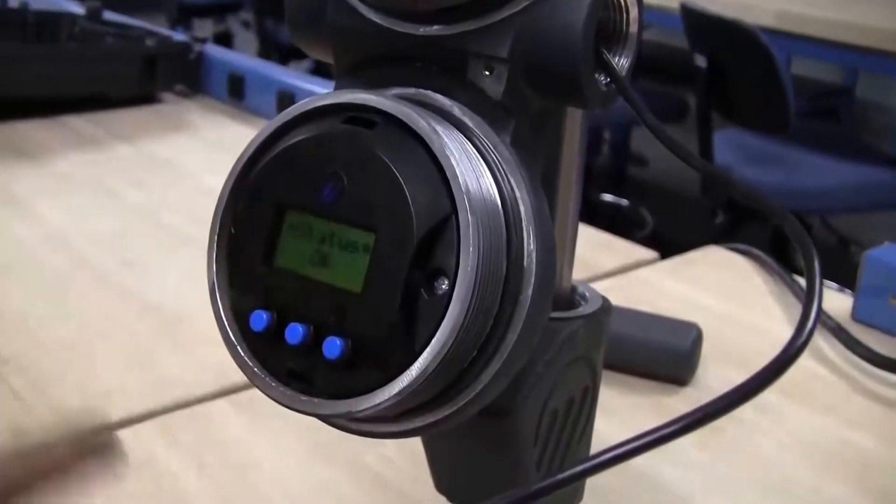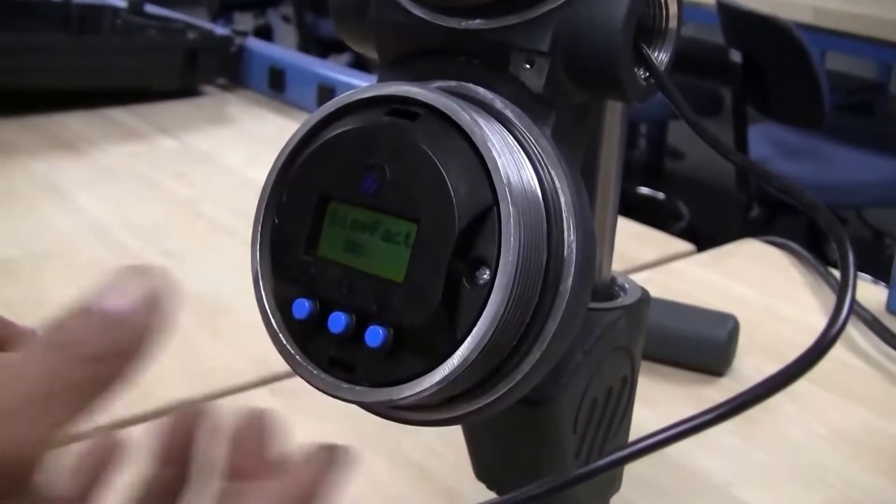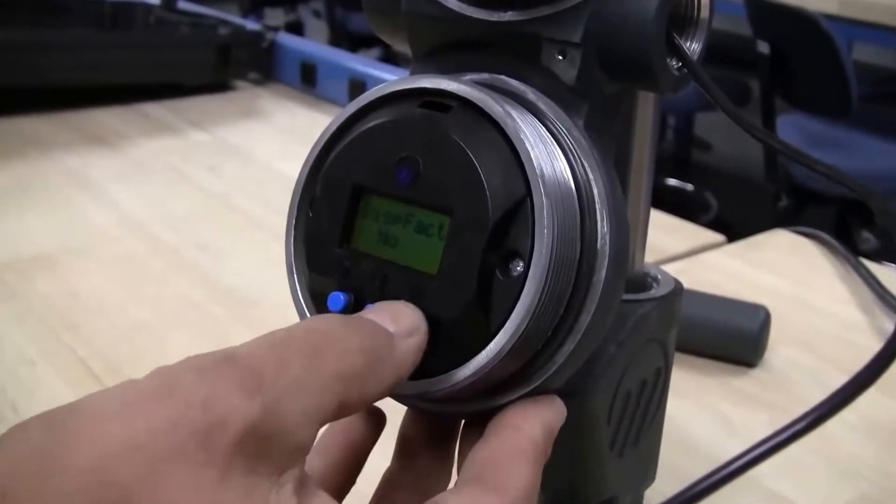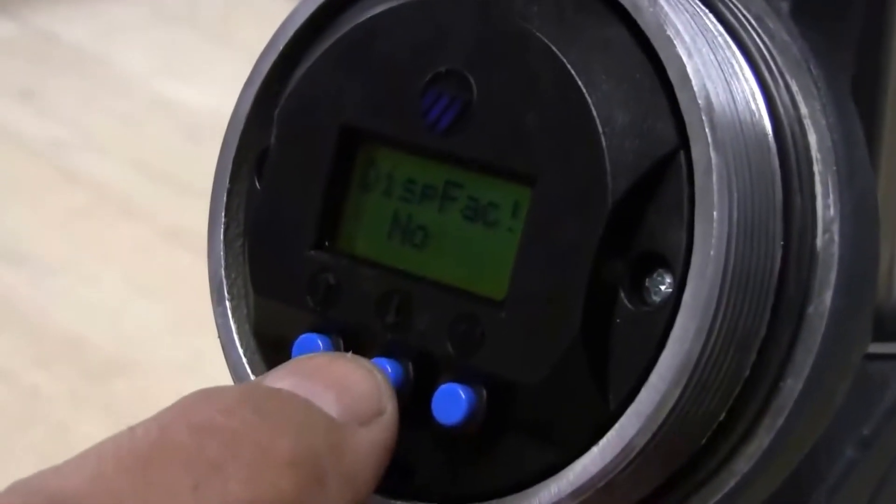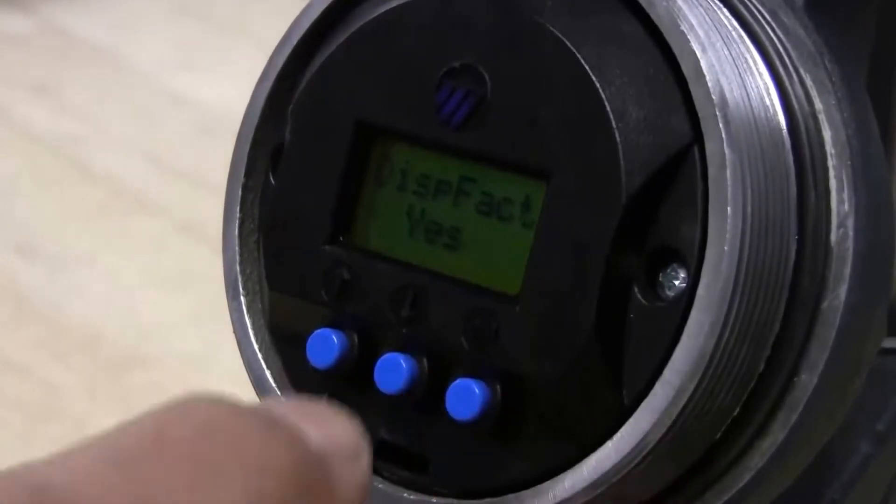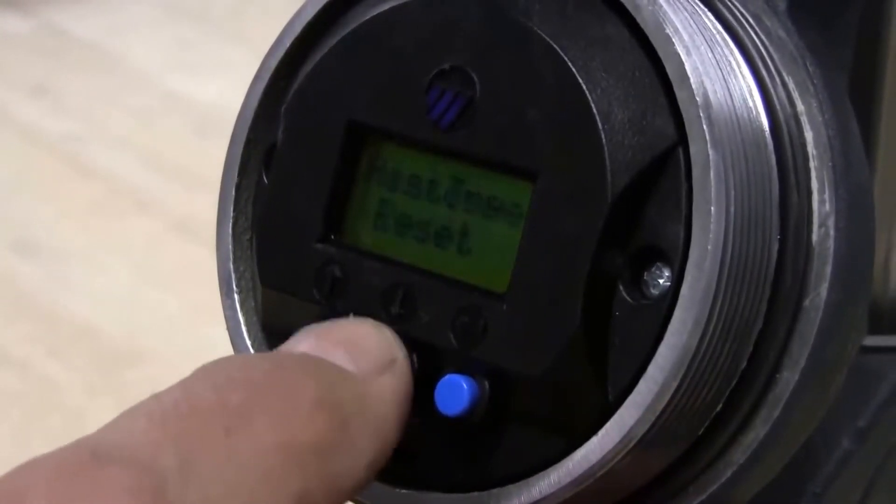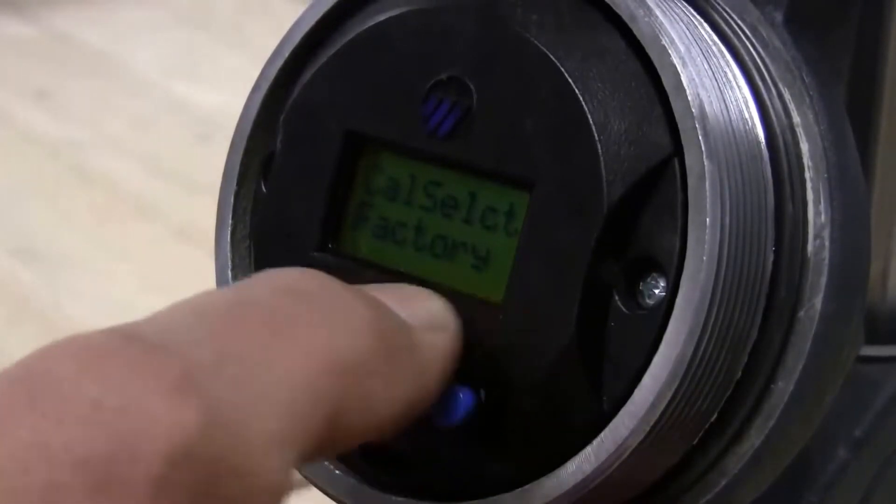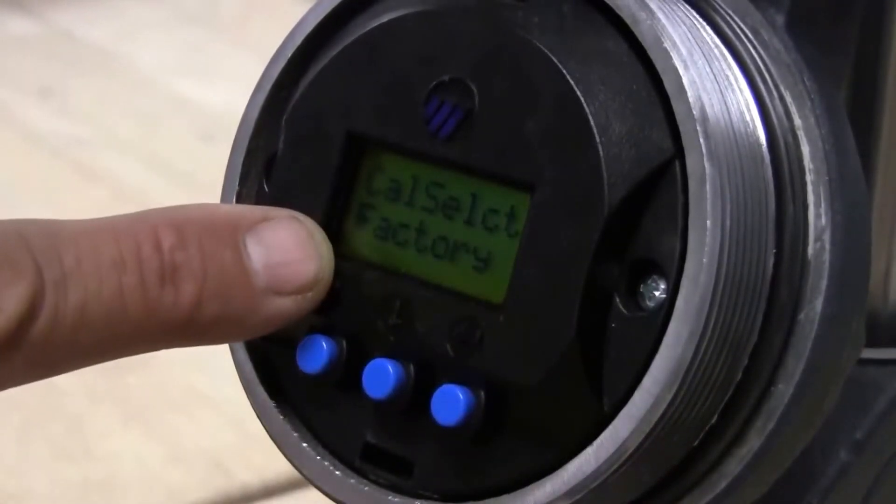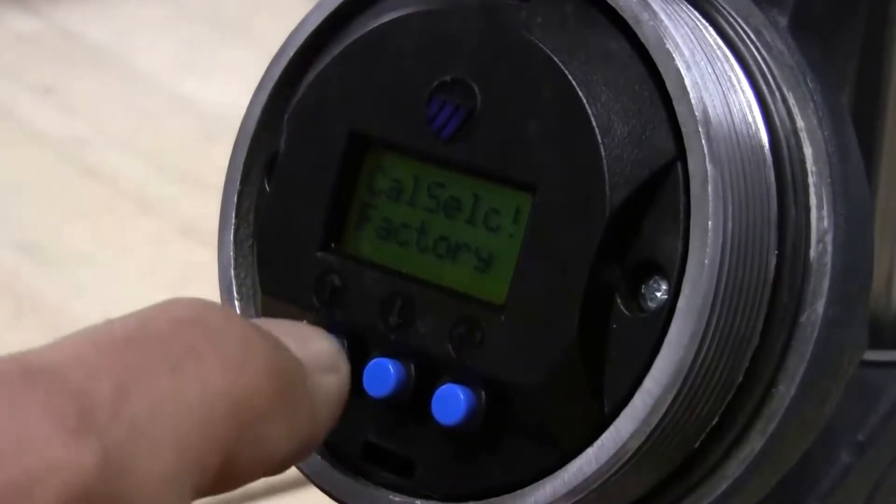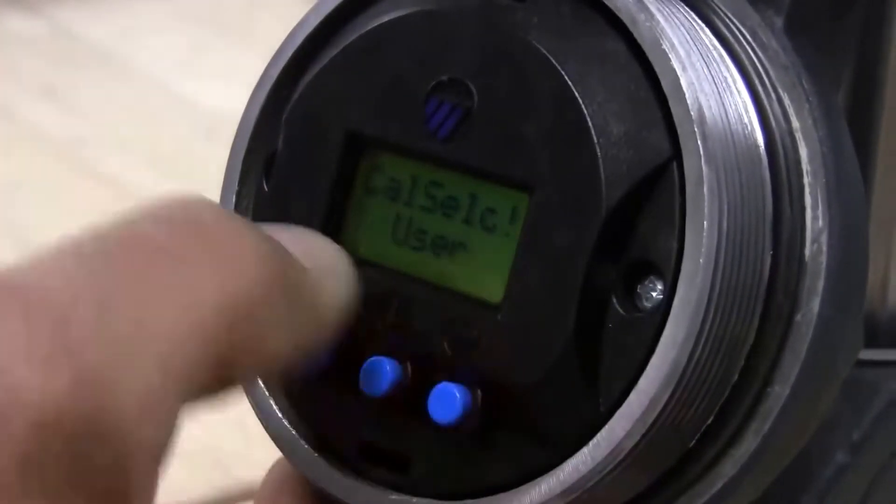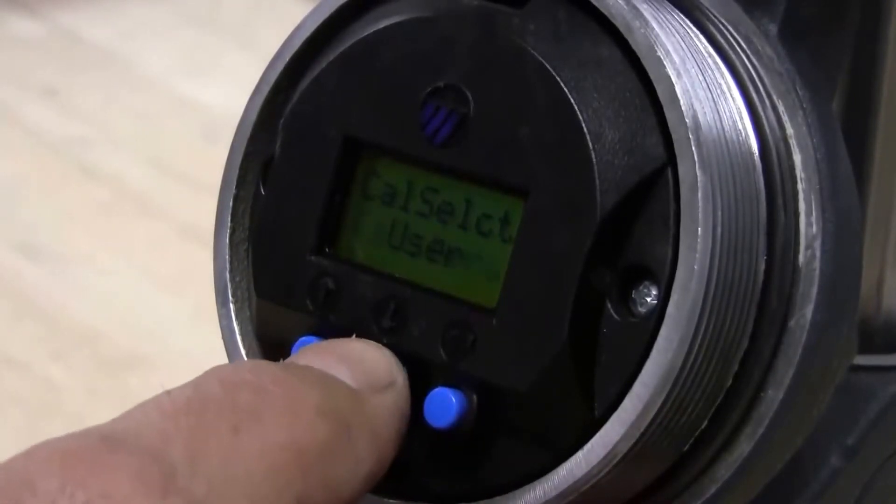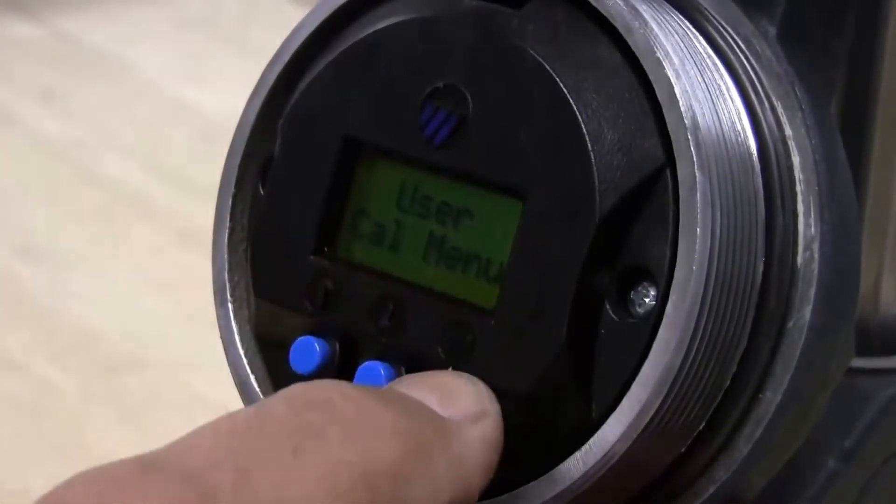From the run mode or scrolling mode here, you push the up key. It's going to say display fact, no. Push enter, and down arrow or up arrow to change no to yes. Push enter. Now scroll down to cal select. It'll say factory. Push the enter key and change factory to user, and push enter. We are now in the user cal mode.